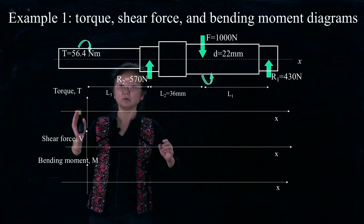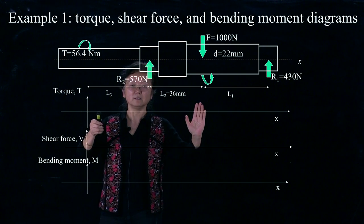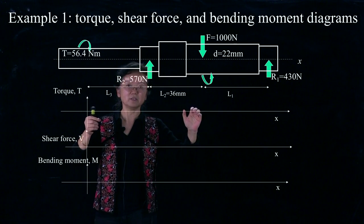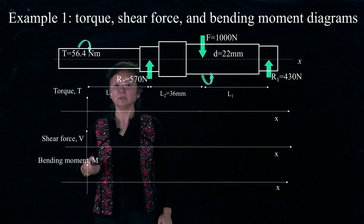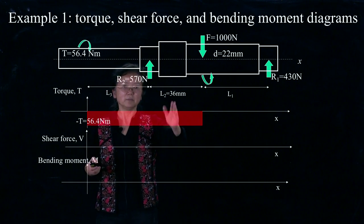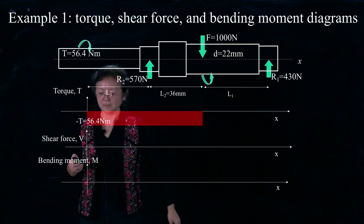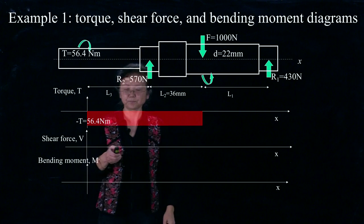We can do the torque diagram first. Torque is only applied in this segment, and going by the sign convention, both are negative. So we can do this torque diagram easily, because in between any segment, we should see the same torque.